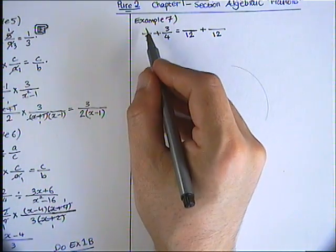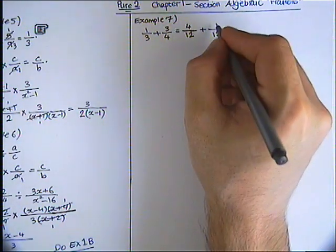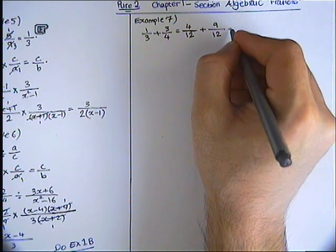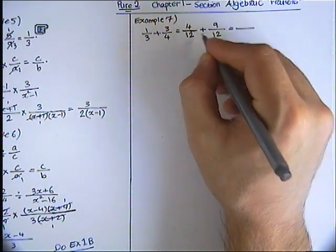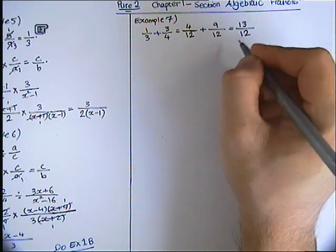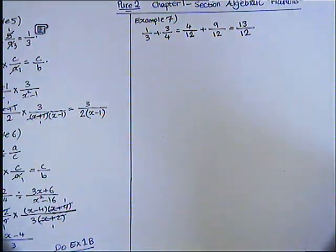We multiply 3 by 4, therefore 1 times 4 is 4. And 4 by 3, which is, in the meantime, 3 times 3 is 9. Now 4 add 9 is 13 over 12. 13 and 12 are not divisible by the same number, therefore that's the simplest form.